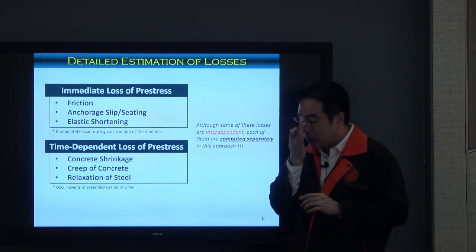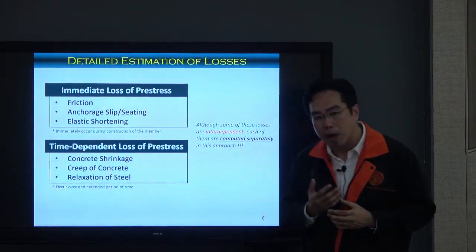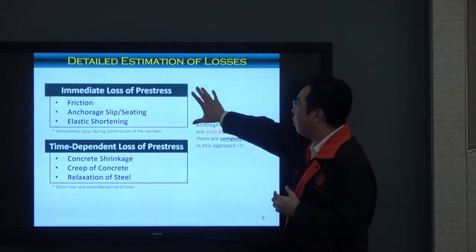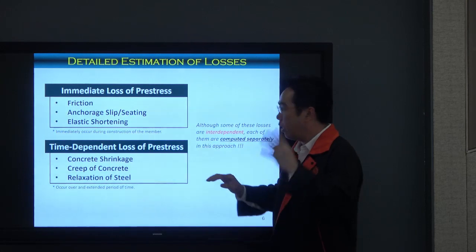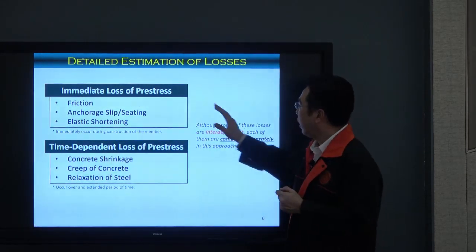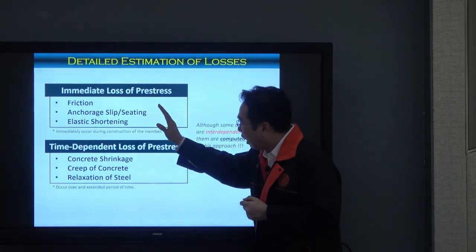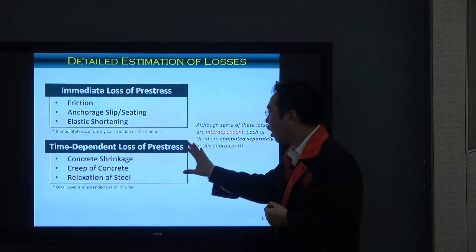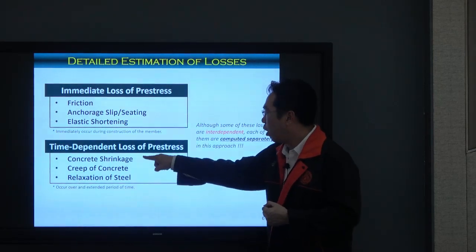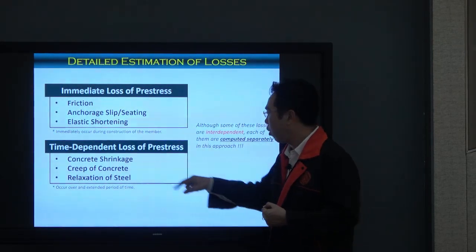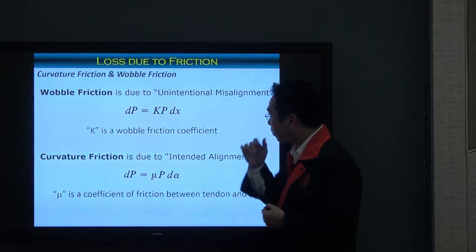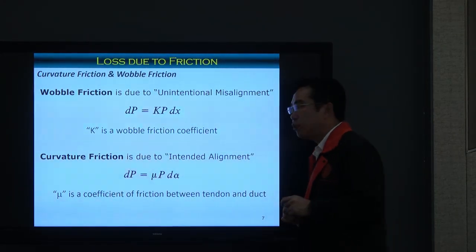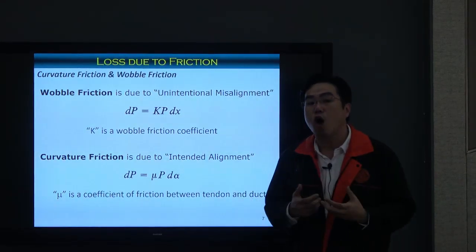Now let's go into detail on each component. For immediate losses, we have: friction, anchorage slip (sometimes called anchorage seating), and elastic shortening. For time-dependent loss, we have: concrete shrinkage, creep of concrete, and relaxation. The first immediate loss — loss of pre-stress due to friction — occurs because when you put the pre-stressing tendon in, it will touch with some materials, most probably the duct. When you pull the pre-stressing force, the tendon tries to move in the same direction, and there will always be friction acting in the opposite direction.